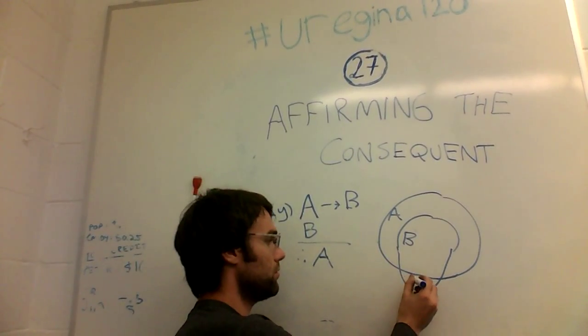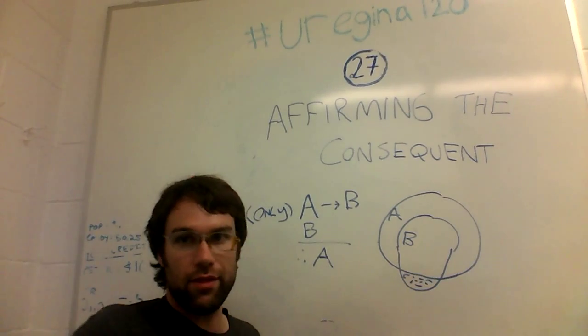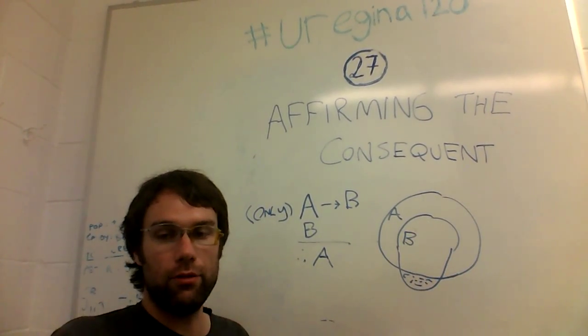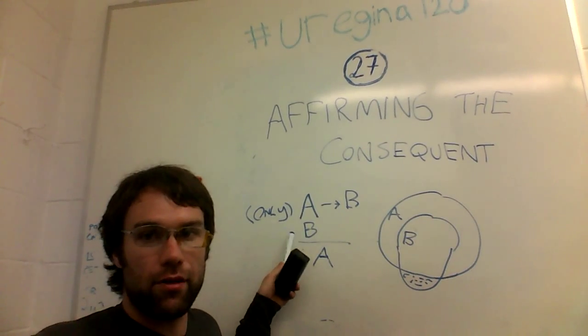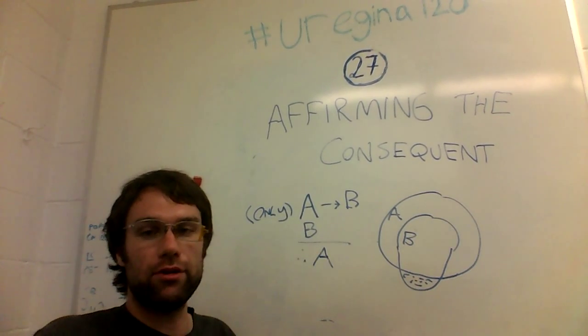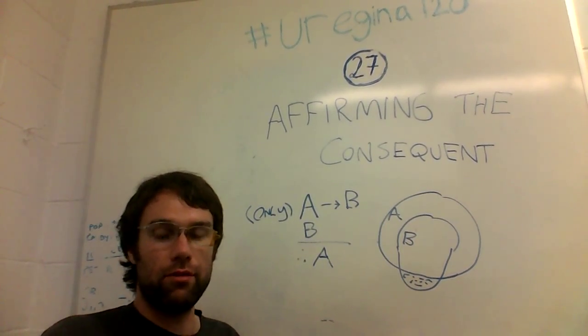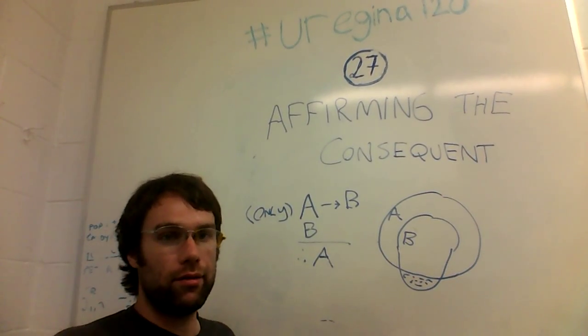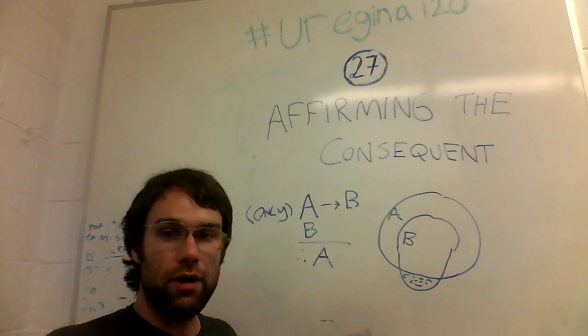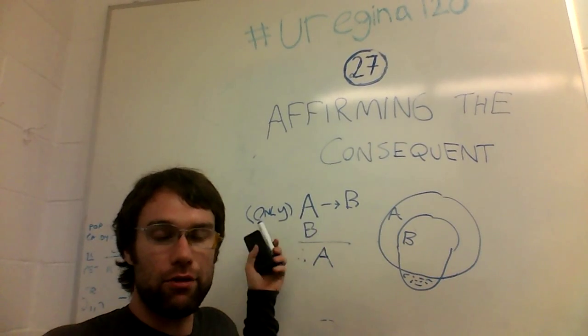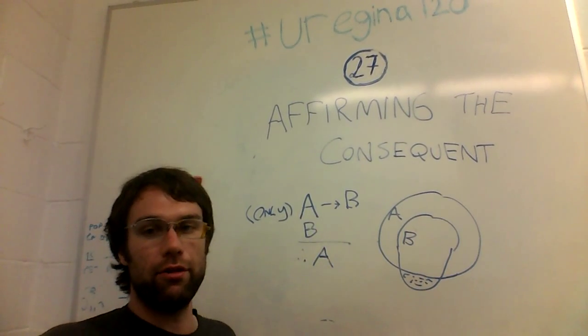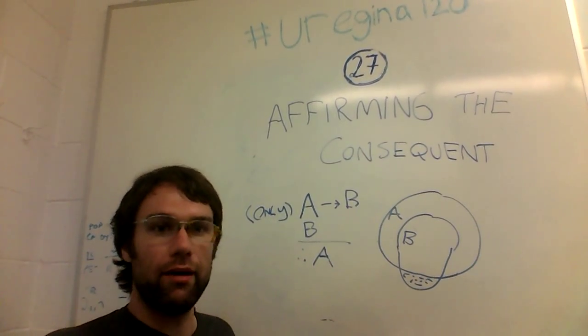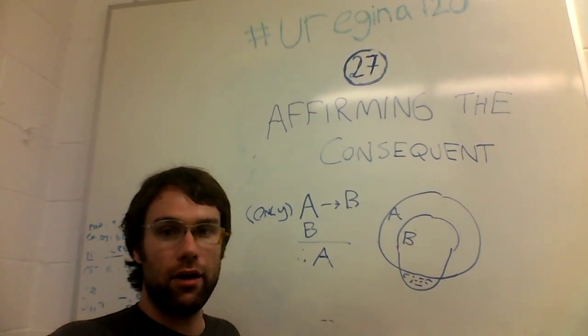Looking at our Venn diagram, if the only case where you can find B is within A, and you have B, then you can conclude that you're also in A. However, if you have any other situation, for example something like this, then that's not the case. Where it's possible in this region here that you can have B but not A, in which case you could have something that made this argument not true, which means that the argument itself is not valid. But generally, if you affix only to the first premise, then you no longer have this invalid form. That's one way of getting to a valid argument of this form.